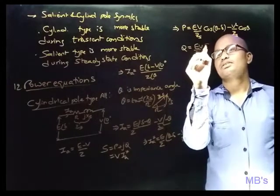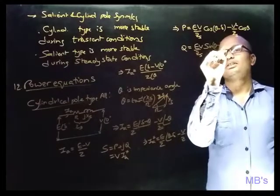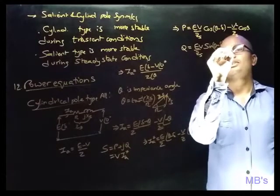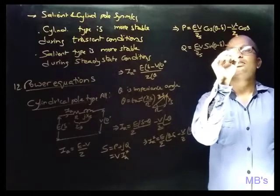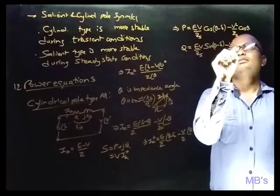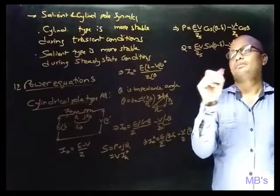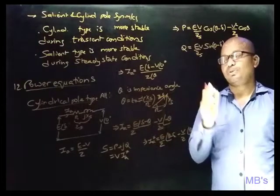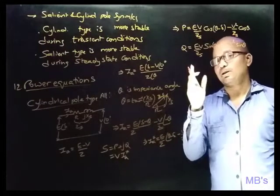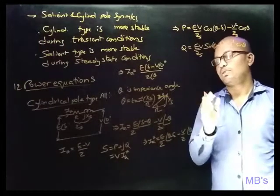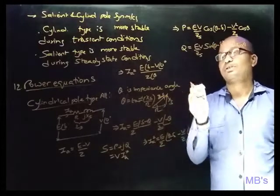The reactive power Q equals (EV/Zs) × sin(θ − δ) minus (V²/Zs) × sin θ. These are the real and reactive power equations for the cylindrical pole type alternator.